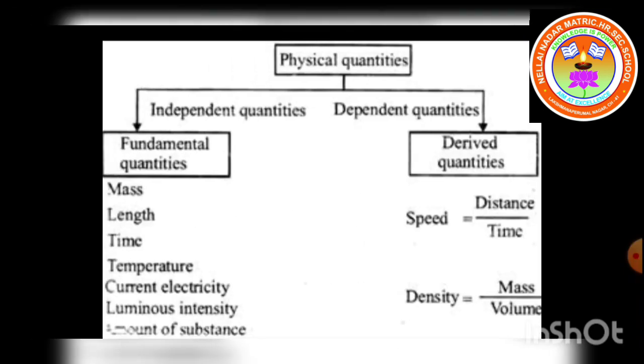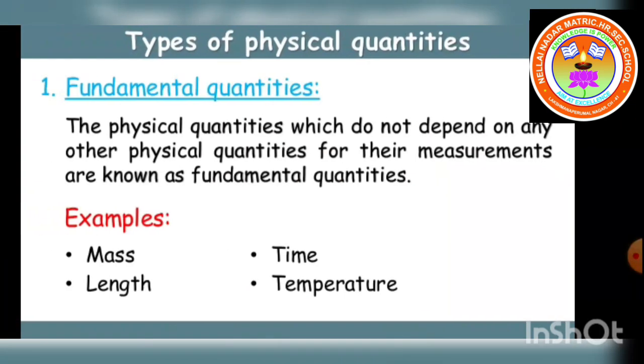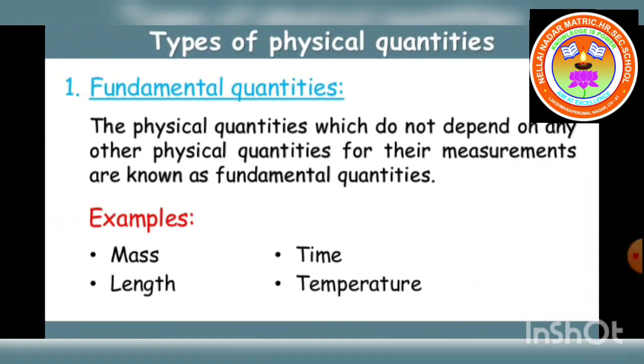Physical quantities can be classified into fundamental quantities and derived quantities. Let me explain the definition of each. Fundamental quantities.